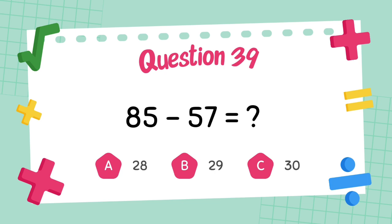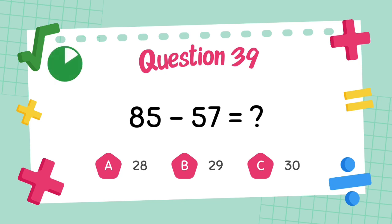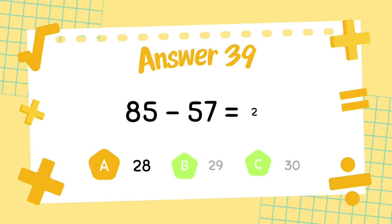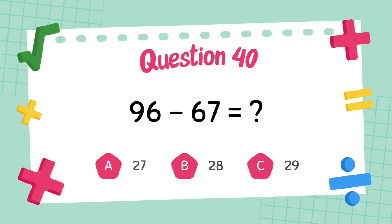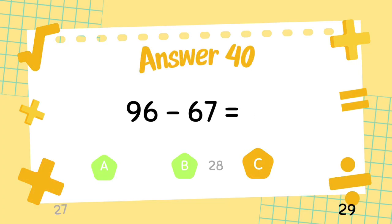What is 85 minus 57? The answer is 28. What is 96 minus 67? The answer is 29.